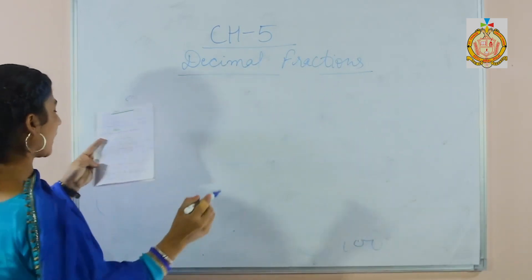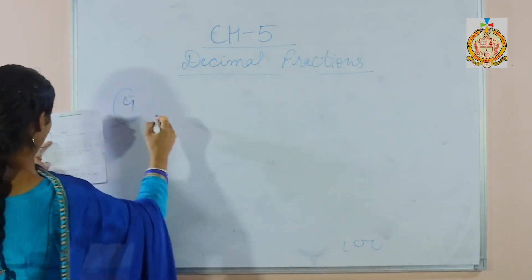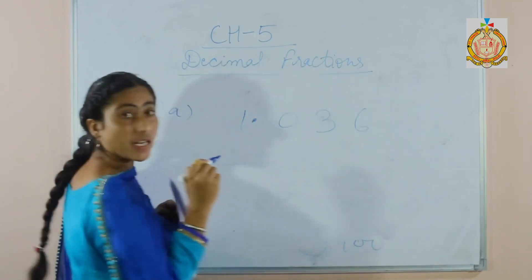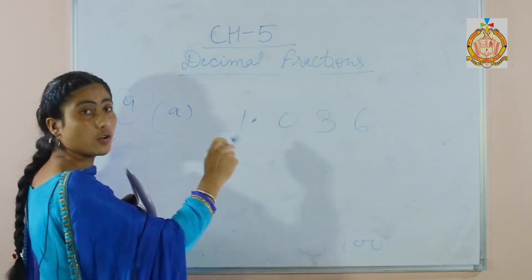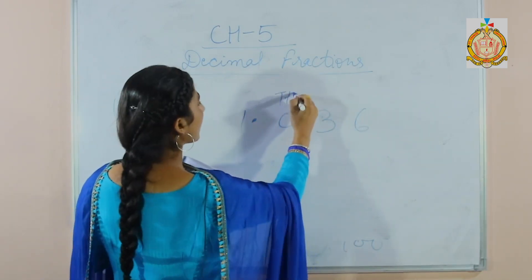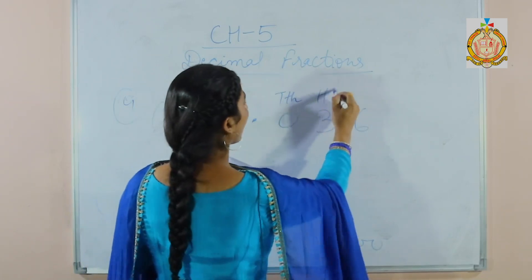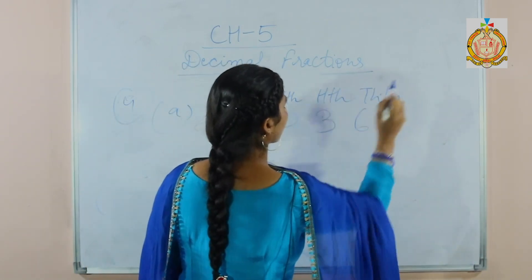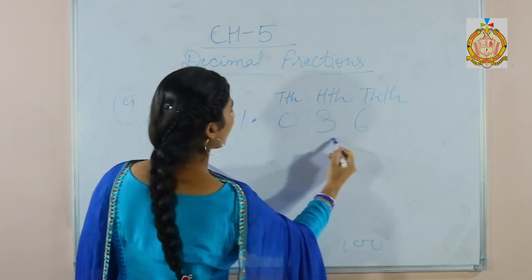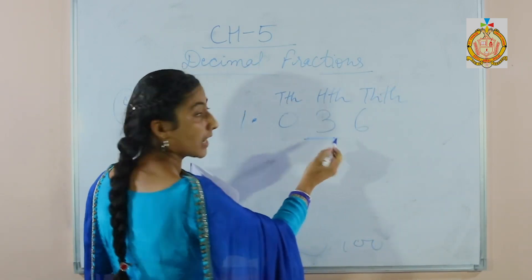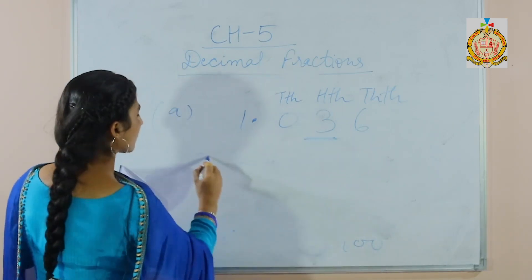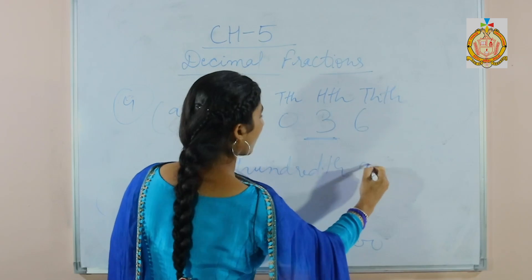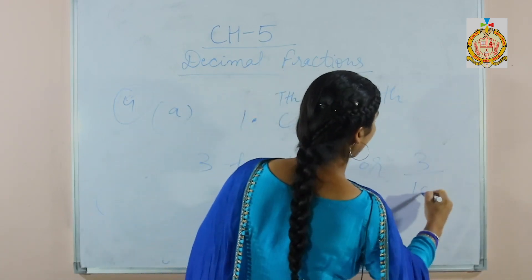Now see the next part: write the place value of the underlined digit. 1.036 — firstly write the place value of each digit: this is 10th, this is 100th place, this is 1000th place. In the first sum we have to write the place value of underlined digit 3. So write 100th, or you can write 3 over 100.